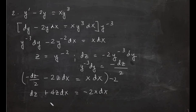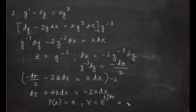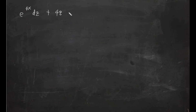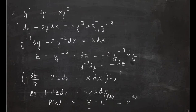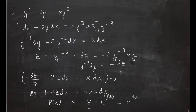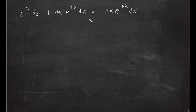This equation is now linear in z, with P(x) equal to 4. Our integrating factor is e raised to 4 integral of dx, which equals e raised to 4x. Multiplying through by e raised to 4x gives e raised to 4x dz plus 4z e raised to 4x dx equals negative 2x e raised to 4x dx.